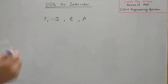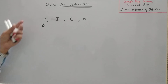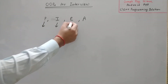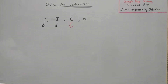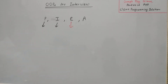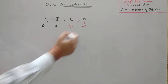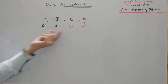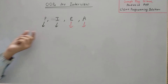You should explain like this: Polymorphism allows us to define more than one function with the same name. Inheritance — we can inherit the properties of a base class into a child class. Encapsulation — we can wrap the data members and member functions into a single unit, and this unit is known as a class, so no one from outside can modify the data. Abstraction is showing the functionality and hiding the complexity.